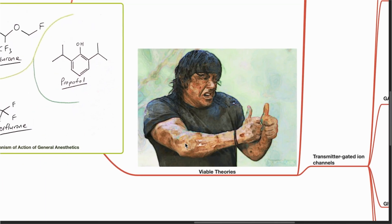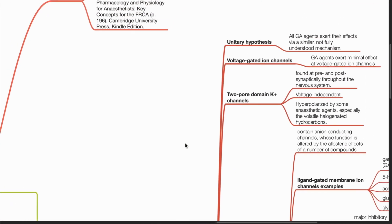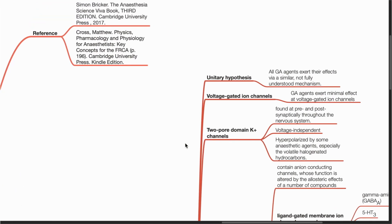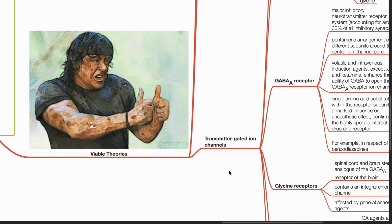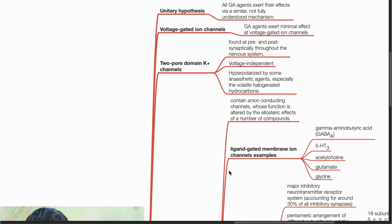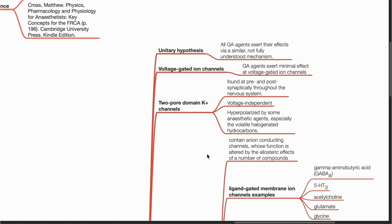Regarding viable theories, these include the unitary hypothesis, actions of GA agents on voltage-gated ion channels, two-pore domain potassium channels, and transmitter-gated ion channels. All GA agents exert their effects via a similar but not fully understood mechanism. GA agents exert minimal effect at voltage-gated ion channels.